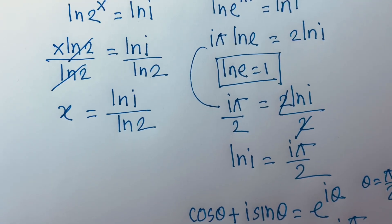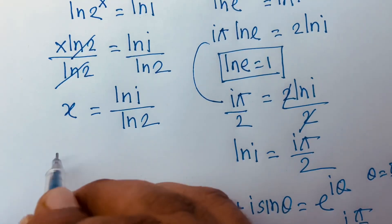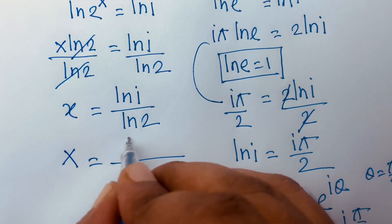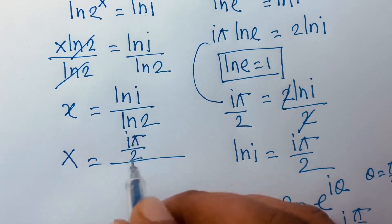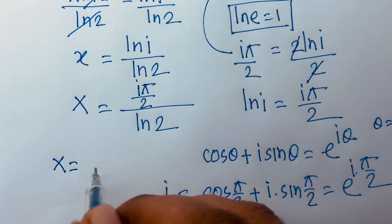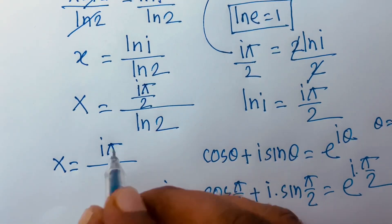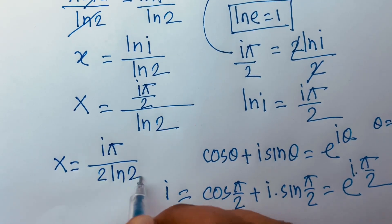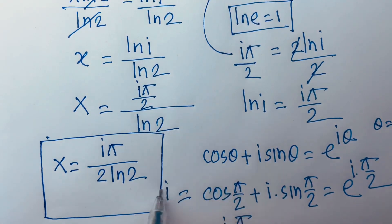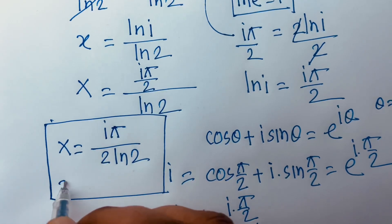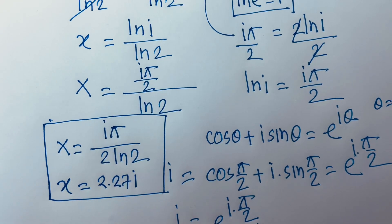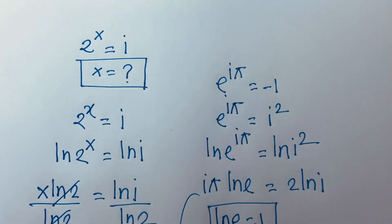Our equation is x equals ln i over ln 2. Substituting ln i equals i pi over 2, our final answer is x is equal to i pi over 2 ln 2. Using a calculator, x is approximately equal to 2.27i. Thank you all — if you enjoyed this video, please subscribe to my channel and like this video. Goodbye!